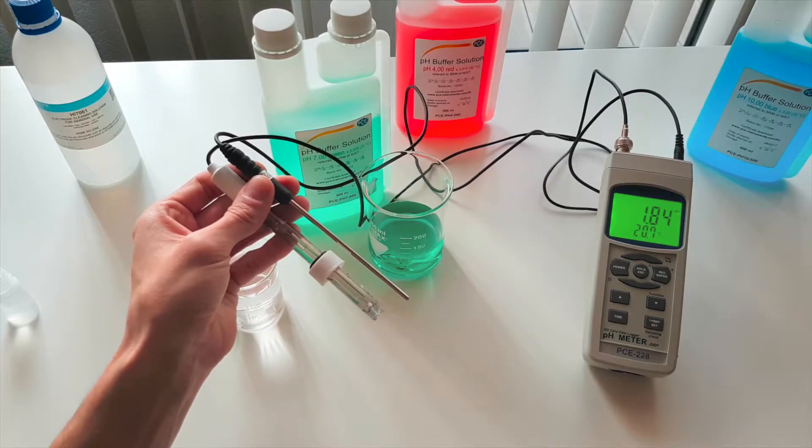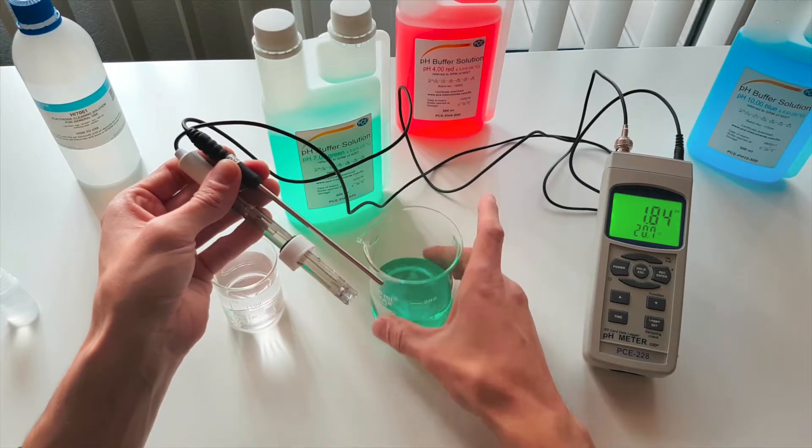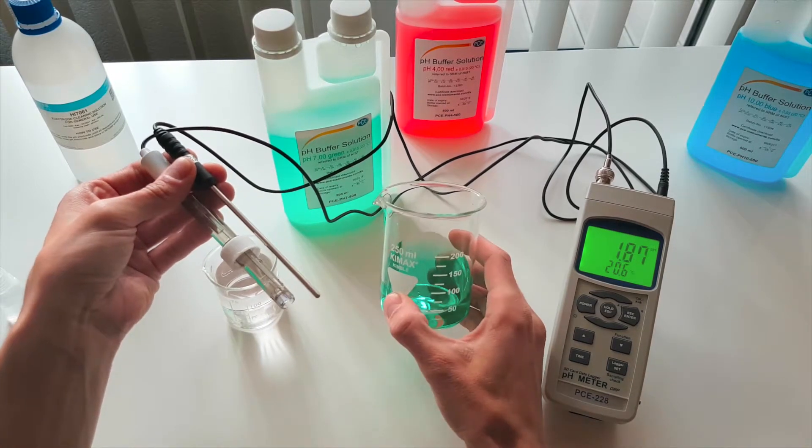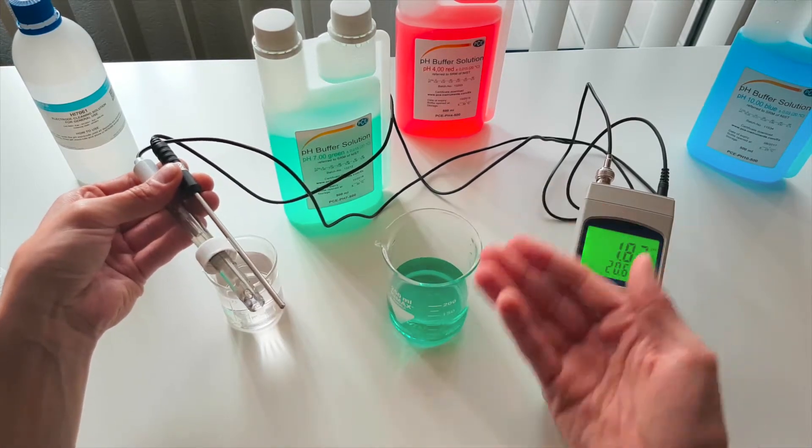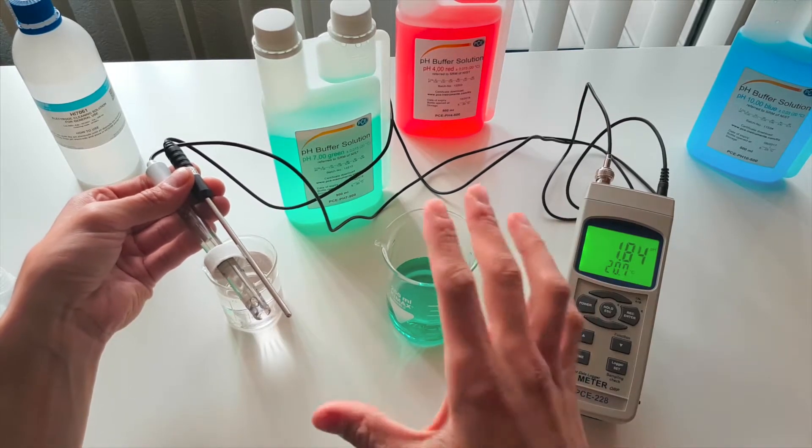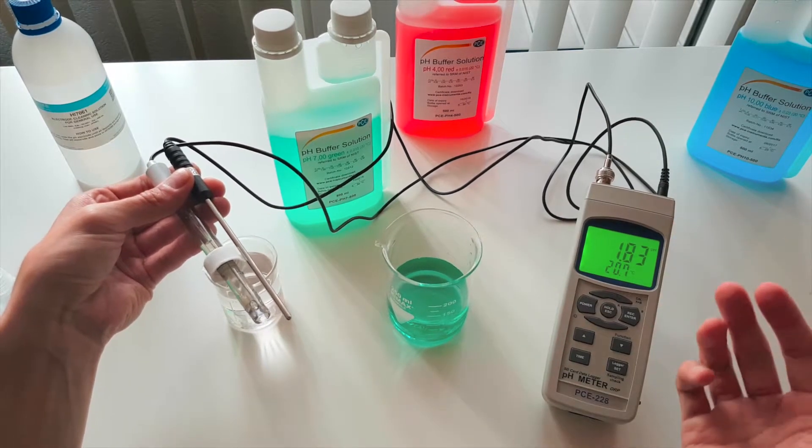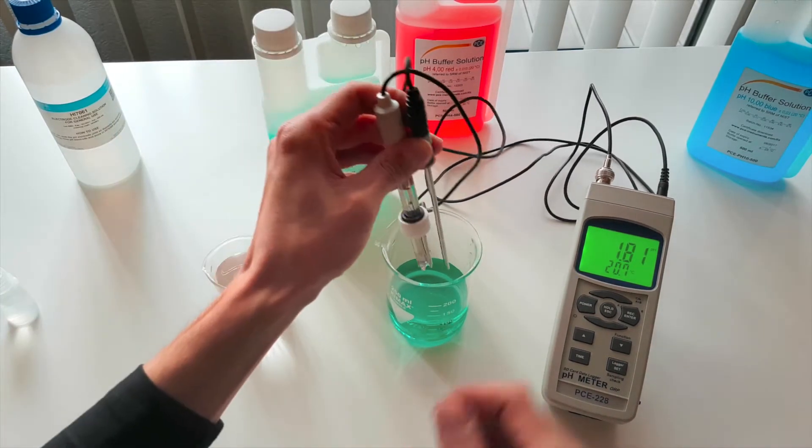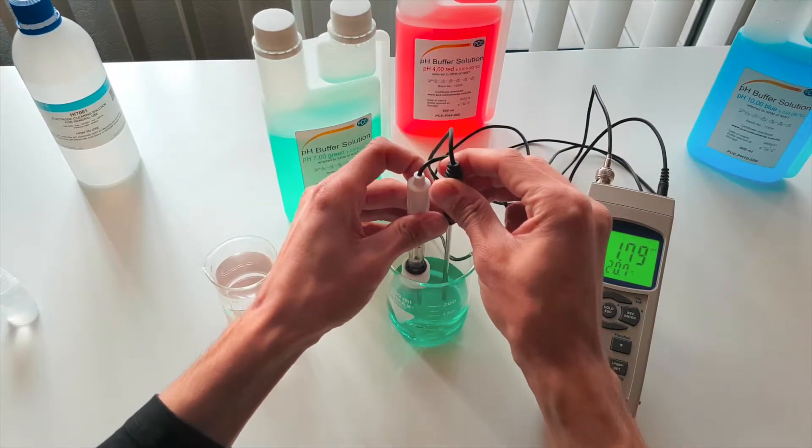So the electrode is cleaned again. And currently it has a value of 1.8 pH value. And now we can take a look at this green fluid. Green is a signal color. So as the color red. Warning acid. Blue goes towards soap. That is why we are here green with a pH value of 7.0. And now we can look what sort of measurement comes out here.